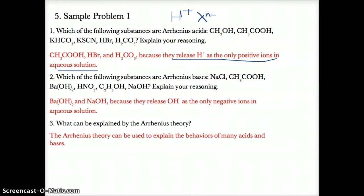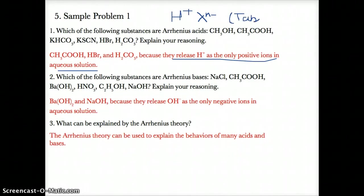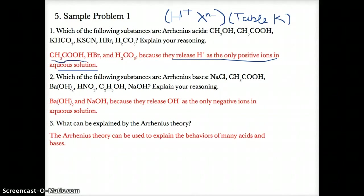Those are the two ways you can tell: if you have an H+ in front followed by a negative ion, or if they're on table K. In this case, the only Arrhenius acids are CH3COOH, HBr, and H2CO3, because they release H+ as the only positive ions in aqueous solution.